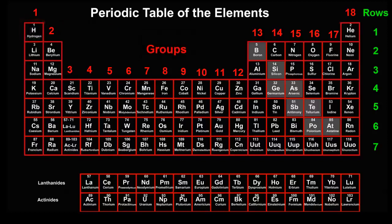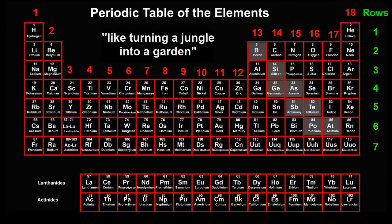The periodic table squeezes a lot of information into a small space. The English writer C.P. Snow said that the periodic table took all the jumbled facts about the elements and fitted them into a pattern. And it was like turning a jungle into a garden.